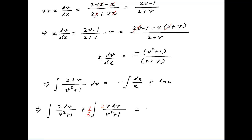This is equal to the right hand side, which is minus ln x plus ln c, which can also be written as ln of c upon x.